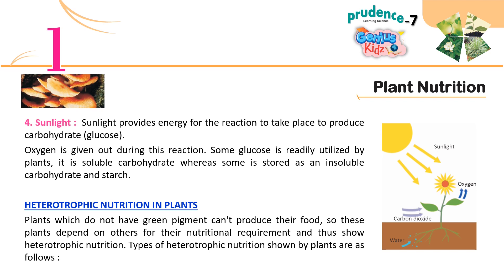Heterotrophic nutrition in plants: Plants which do not have green pigment cannot produce their own food, so these plants depend on others for their nutritional requirements and thus show heterotrophic nutrition. Types of heterotrophic nutrition shown by plants are as follows.